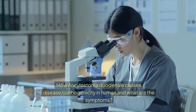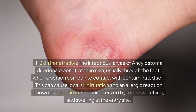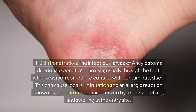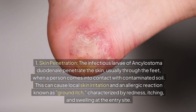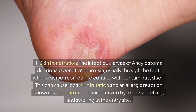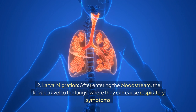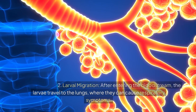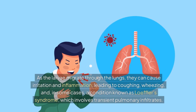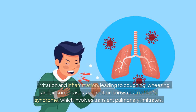How Ancylostoma duodenale causes disease — pathogenicity and symptoms. Step 1 — Skin penetration: The infectious larvae penetrate the skin, usually through the feet, when a person contacts contaminated soil. This causes local skin irritation and an allergic reaction known as 'ground itch,' characterized by redness, itching, and swelling at the entry site. Step 2 — Larval migration: After entering the bloodstream, the larvae travel to the lungs, where they cause irritation and inflammation, leading to coughing, wheezing, and in some cases Loeffler's syndrome, which involves transient pulmonary infiltrates.